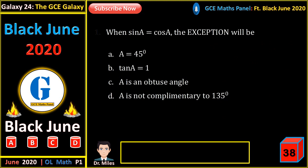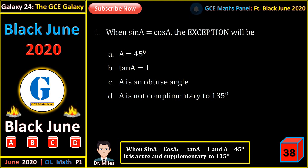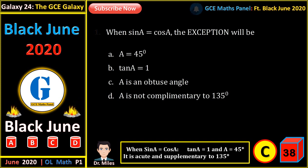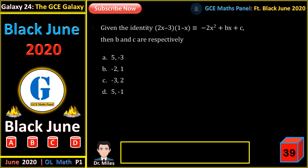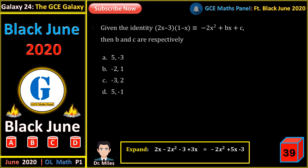When sin A equals cos A, find the angle A. This angle is an acute angle. A is correct, B is correct. C: A is an obtuse angle — A is actually not obtuse; A is supplementary to 135 degrees. Given the identity, the values of B and C are respectively found by expanding and simplifying: minus 2x squared plus 5x minus 3 equals minus 2x squared plus Bx plus C. Equating coefficients gives B equal to 5 and C equal to minus 3.